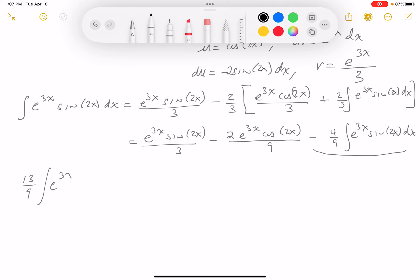So 13/9 times the integral of e^(3x) sin(2x) dx equals e^(3x) sin(2x) over 3 minus 2e^(3x) cos(2x) over 9 plus some constant of integration—I'm going to call it c1. I want to get rid of the 13/9, and I'm going to do that by multiplying both sides by 9/13.